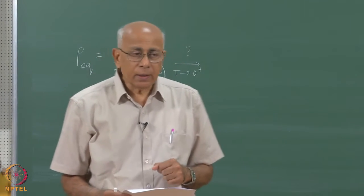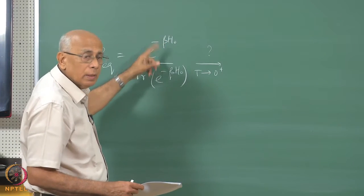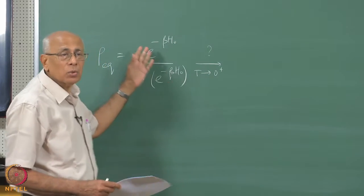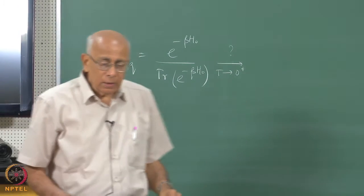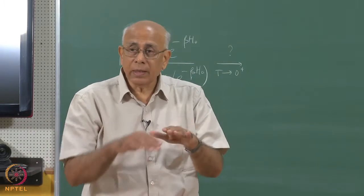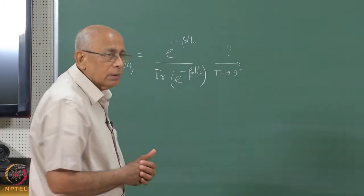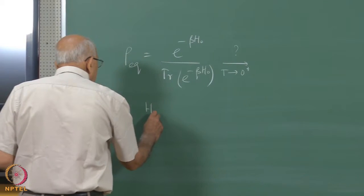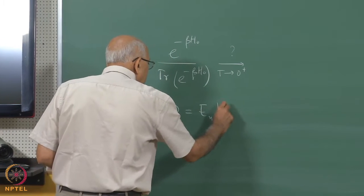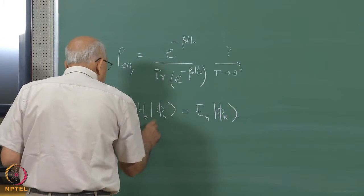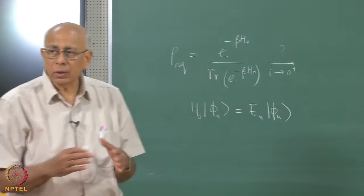What happens to the state as T tends to zero? That means beta tends to infinity. You cannot just set beta going to infinity because then the numerator goes to zero. The denominator must also be taken into account. If you take this system to have a discrete set of energy levels E-naught, E-1, E-2, etc., with corresponding eigenfunctions — H-naught on phi-n equals E-n phi-n — then these normalized states form a complete orthonormal set of eigenvectors.